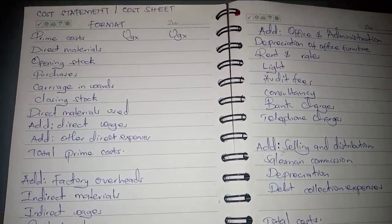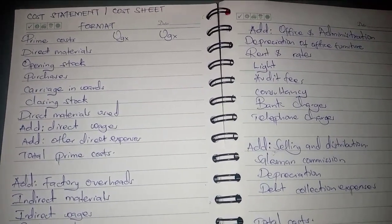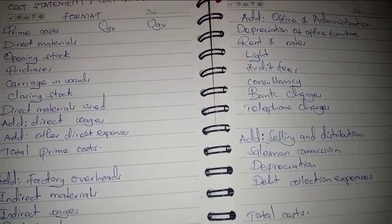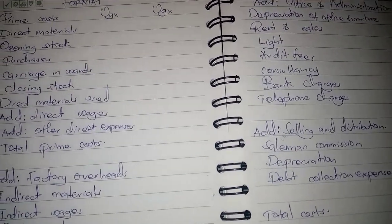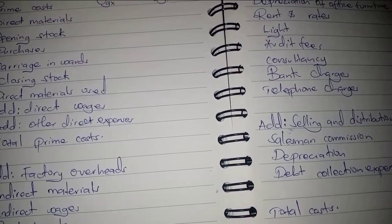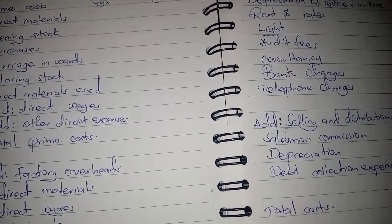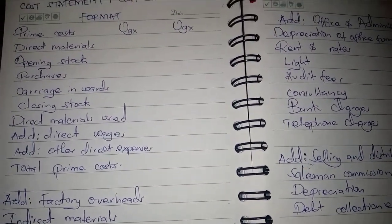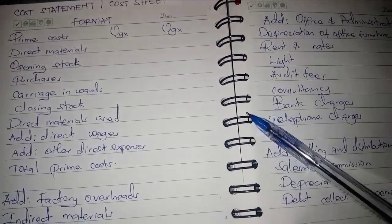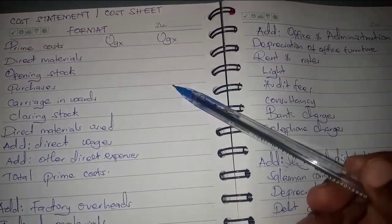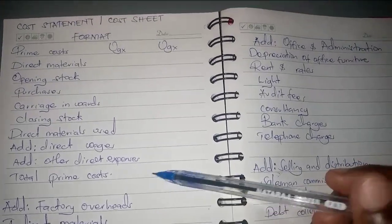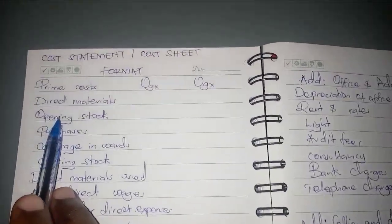In this video we are going to look at the cost statement or cost sheet. This is a statement that analyzes costs according to the elements and functions of costs. We are going to look at its format in this video — how a cost statement or cost sheet is supposed to look like.